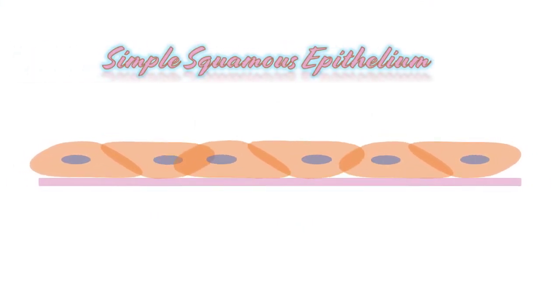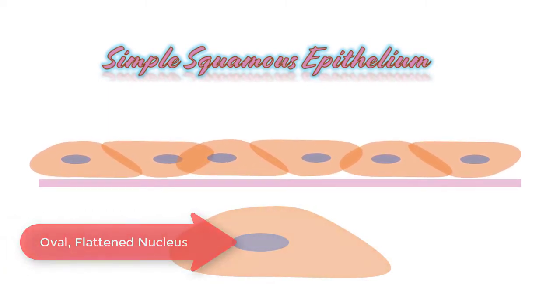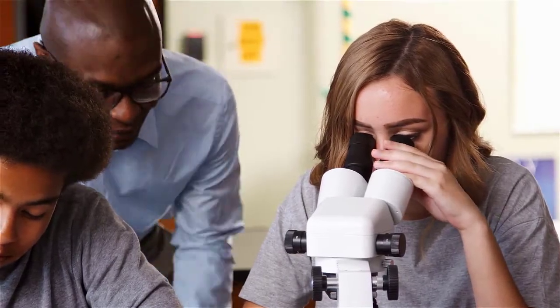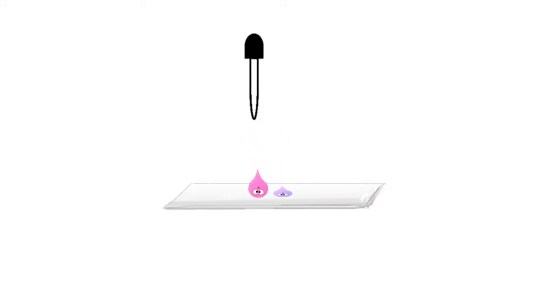Simple squamous epithelium is a tissue made up of short, squashed cells with oval or ovoid shaped nuclei that are also flattened and squashed. On a practical exam, sometimes you will see Simple squamous epithelium on a slide that looks like fried eggs. These cells are from a cheek swab, made by taking a toothpick and scraping the inside of the cheek, then placing it on a slide and staining it with hematoxylin and eosin, creating one single layer of skin cells.